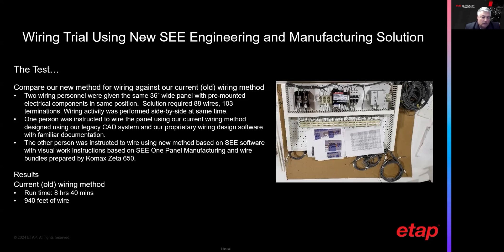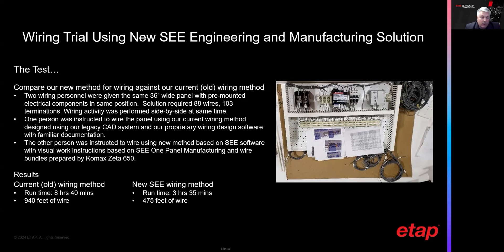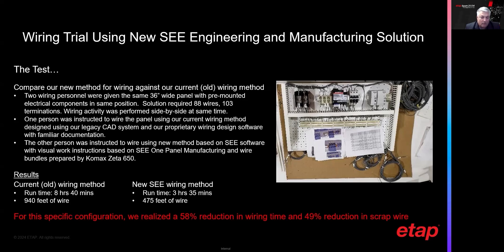Here are the results. The first person doing the wiring the old way: the runtime took about 8 hours and 40 minutes, and they used about 940 feet of wire. The second person using the new method: the runtime was 3 hours 35 minutes and 475 feet of wire. You might ask why we had less wire — well, there was a lot of scrap in the old method because they pull wire longer than they need and end up cutting it to length once it's installed. Whereas with the Comax wires, we calculate that length and cut it on the machine before it's handed to the wiring personnel. In this particular configuration, we realized a 58% reduction in wiring time and a 49% reduction in scrap wire.